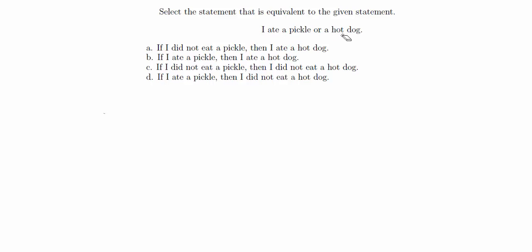If we think of this statement as a compound of two propositions — I ate a pickle being P and I ate a hot dog being Q — then 'I ate a pickle or a hot dog' is P or Q. We converted that statement into a logic statement, and then we have multiple choice options. We'll convert each option into its logic statement, create a truth table, and see which one is logically equivalent to P or Q.